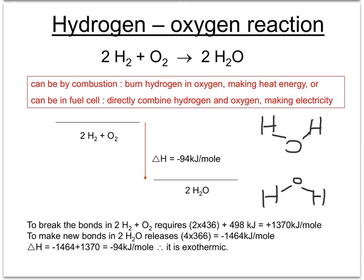That can be represented in this energy level diagram. The energy trapped in the bonds of the hydrogen and oxygen is greater than the energy trapped in the water molecules' bonds, and therefore, during the reaction, 94 kJ of energy are released.